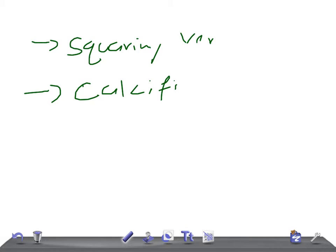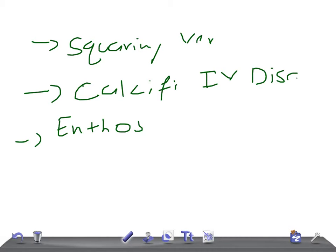Then we have enthesopathy. What is enthesopathy? Enthesopathy means sticking of bones together due to inflammatory lesions, like in ankylosing spondylitis — the bones stick together. That's why it is known as enthesopathy.